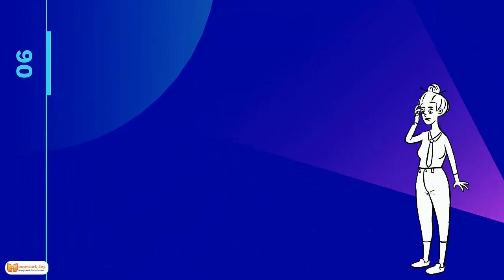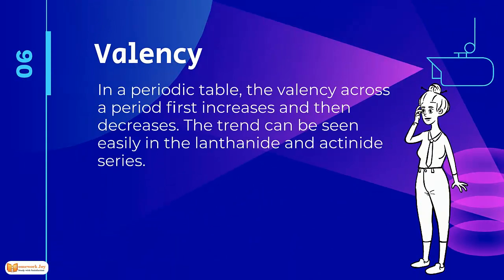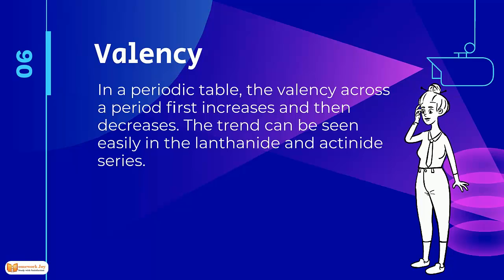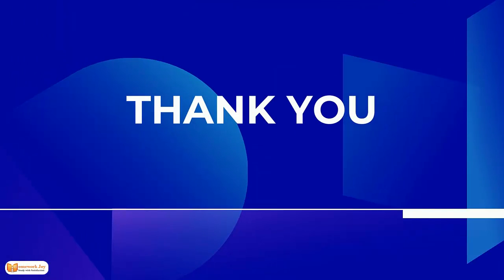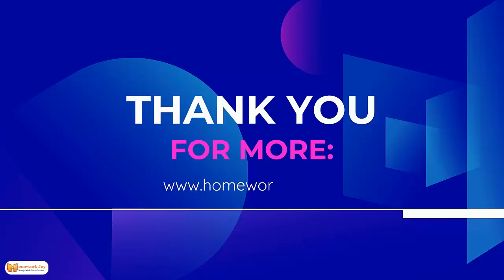Valency across the periodic table first increases and then decreases. This trend can be seen easily in the lanthanide and actinide series.